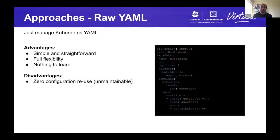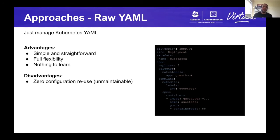Let's start with an easy one: raw YAML. You just give developers plain Kubernetes YAML. This is usually a starting point for most organizations since there's nothing to learn — it's easy, straightforward, and totally flexible. But this strategy really doesn't scale because it has no configuration reuse. It's easy to make a change in one environment and not have it carry over to another. So this is generally seen as just a stepping stone.